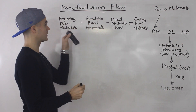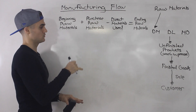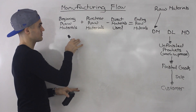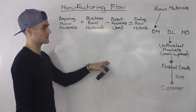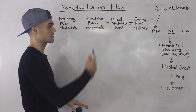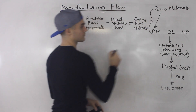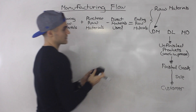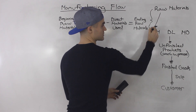Those ending raw materials are going to be used as beginning raw materials in the next period. If you remember from accounting, you had beginning assets and ending assets on the balance sheet — same type of thing. You have beginning raw materials at the start of the period, you purchase some within the period, some get used and put into production, and you end up with ending raw materials that become beginning raw materials in the next period. This covers that part of the manufacturing flow up to direct materials.